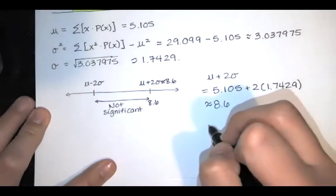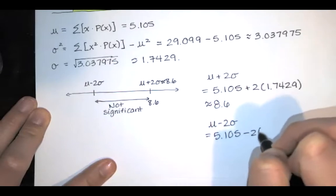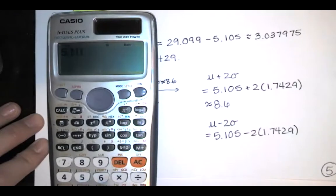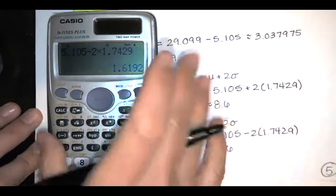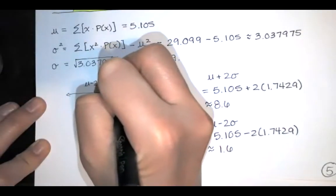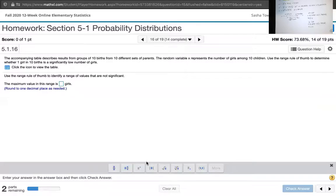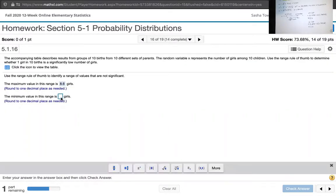To find the lowest non-significant value, we'll take the mean and subtract two standard deviations. And that is approximately 1.6 girls. Let's go back to our homework assignment. There it is, the maximum value was 8.6. We did that calculation. The minimum value was 1.6.